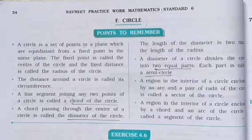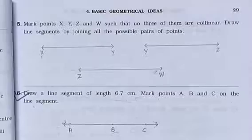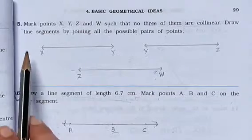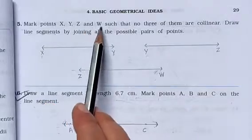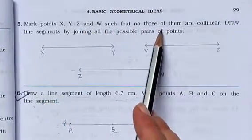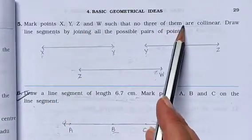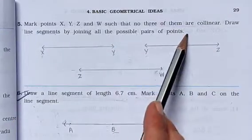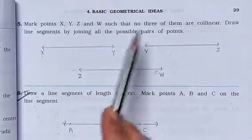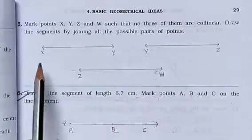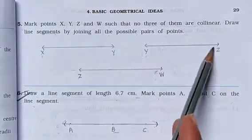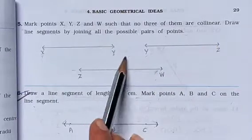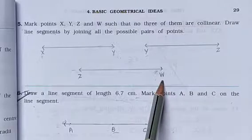So all the theory points are completed. Now we are going to start the workbook. Question number 5: Mark points X, Y, Z and W such that no three of them are collinear. Draw line segments joining all possible pairs of points — that means draw XY, then YZ, and then the remaining combinations.